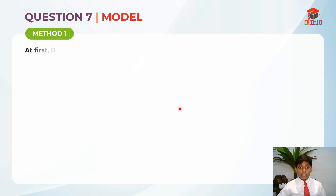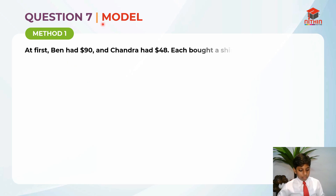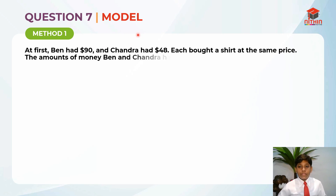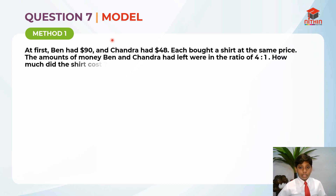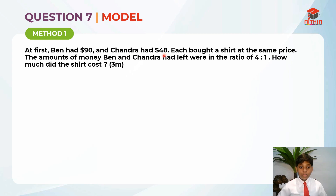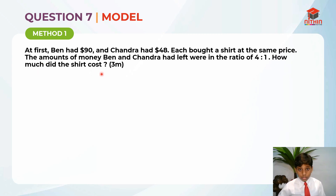Question 7 has two methods to solve it. I'll be going through Method 1 right now, which is using the model method, and later in the video I'll go through Method 2. Let's read the question first. At first, Ben had $90 and Chandra had $48. Each bought a shirt at the same price. The amounts of money Ben and Chandra had left were in the ratio of 4 to 1. How much did the shirt cost?